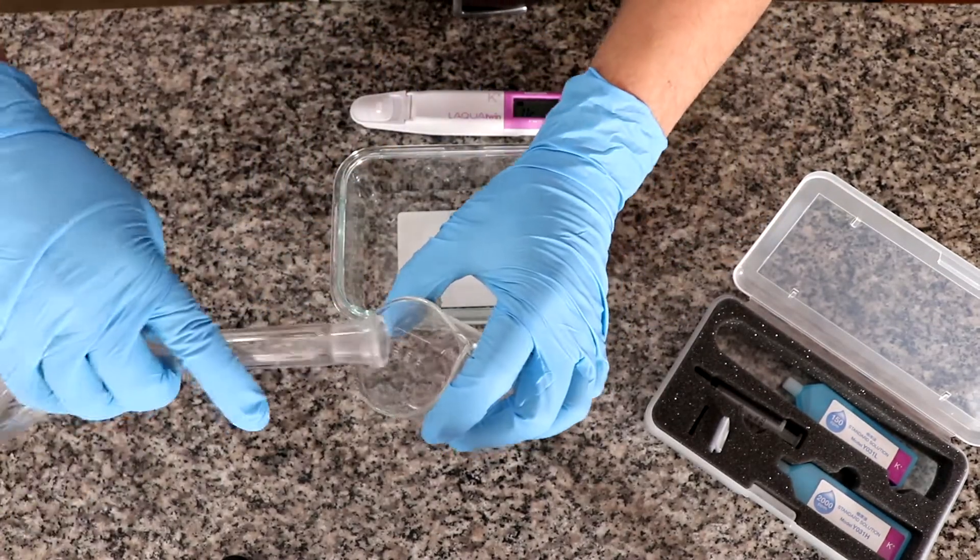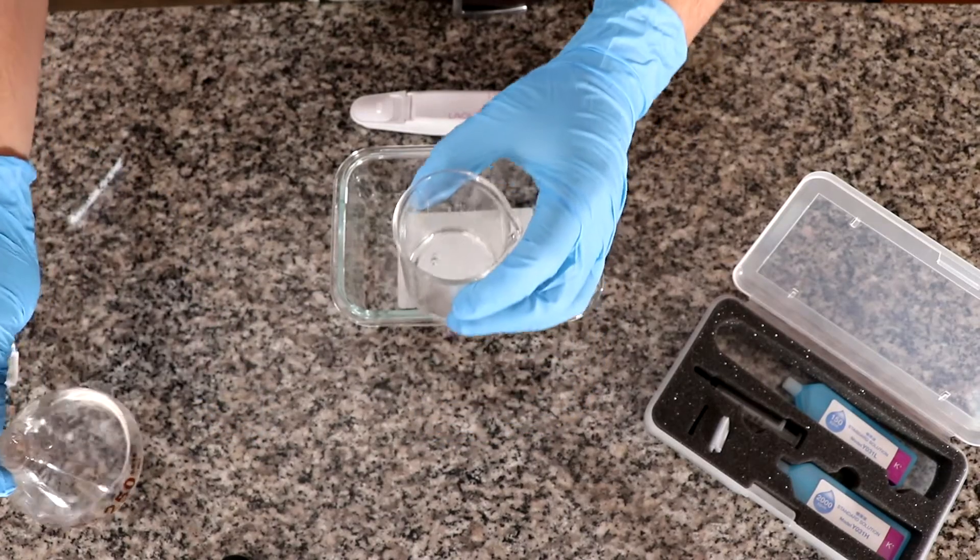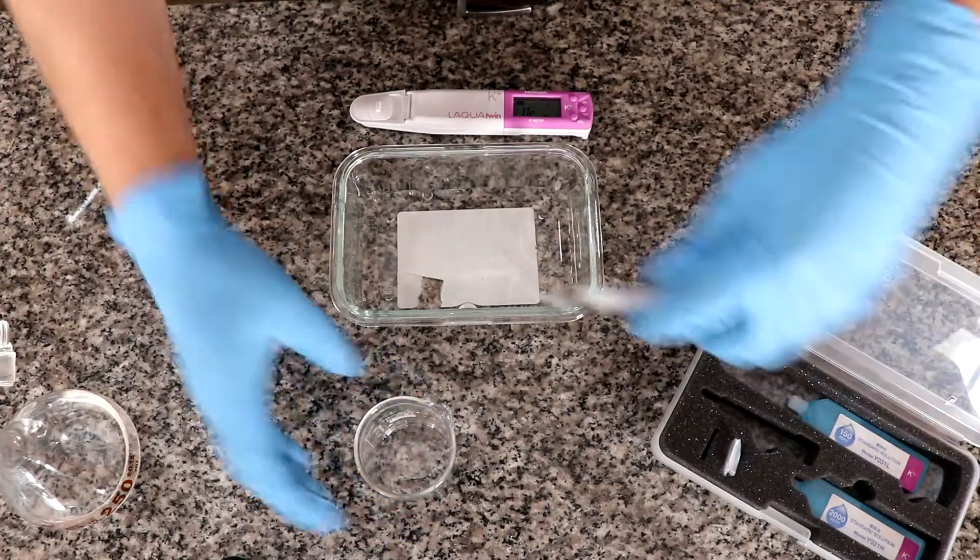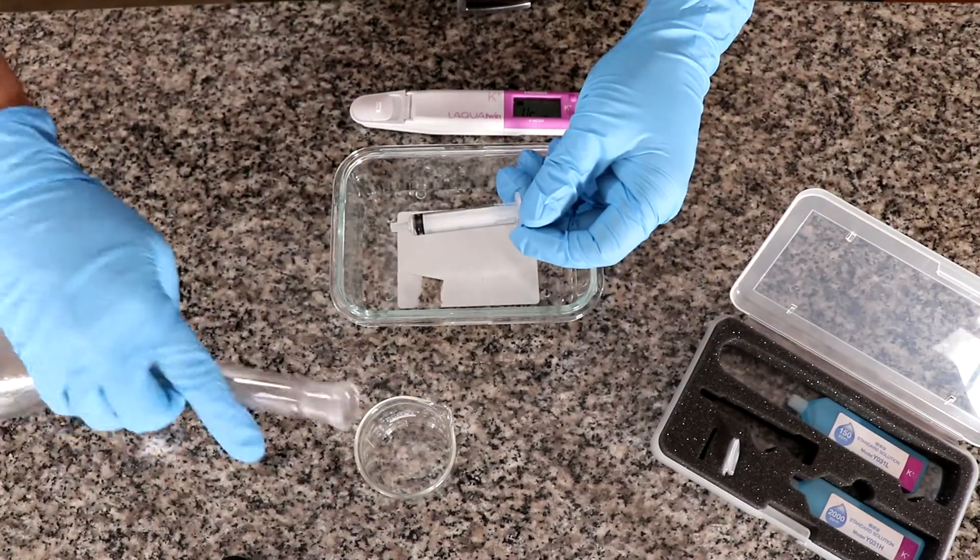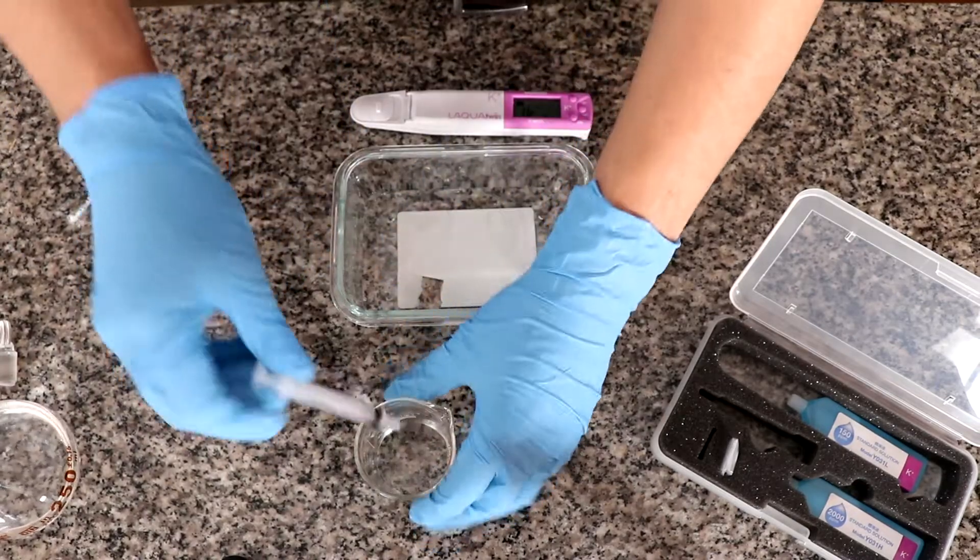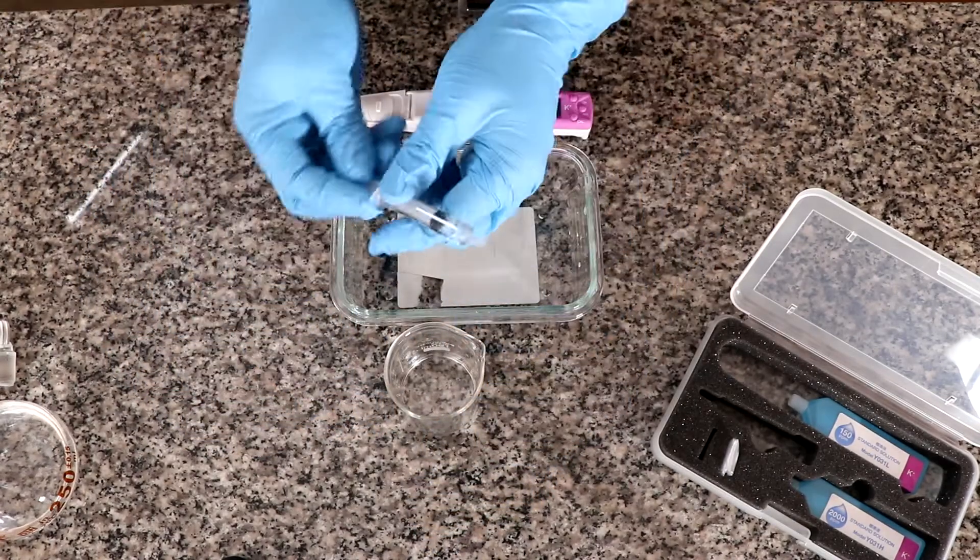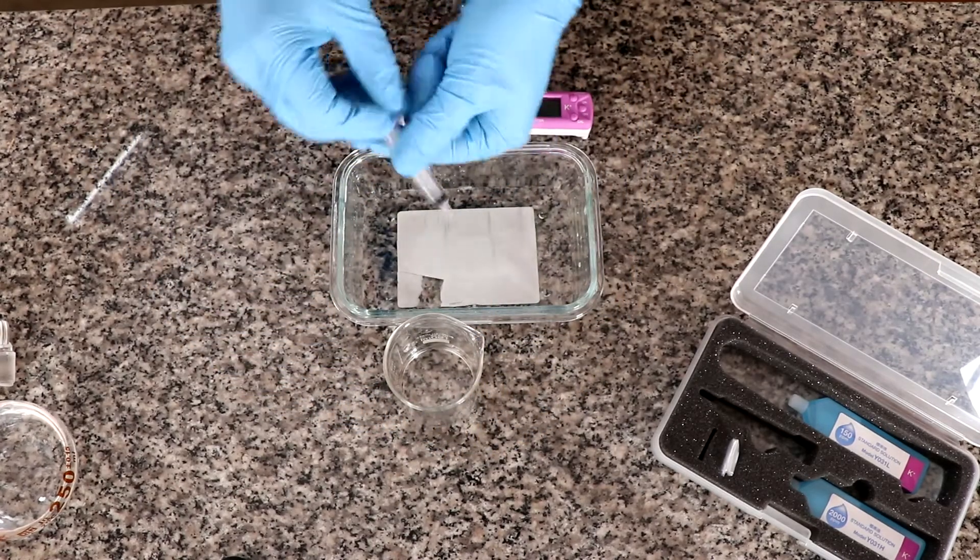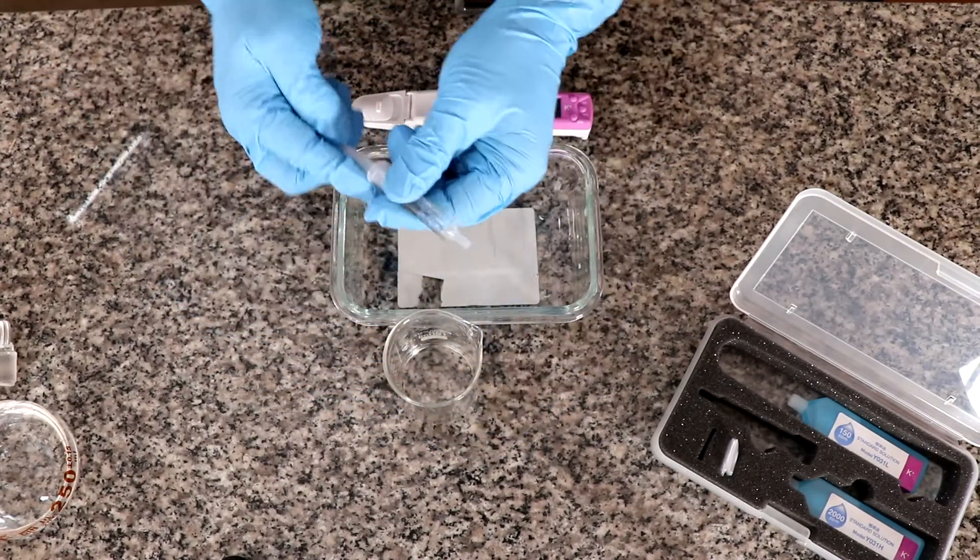So we'll see what the concentration of this fertilizer actually is in potassium. So I'm going to purge this beaker first. Now I'm going to use the syringe that comes with the electrode in order to measure. So I'm going to purge this two, three times.